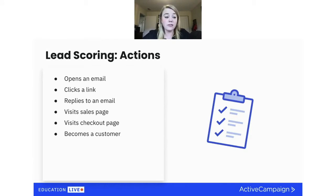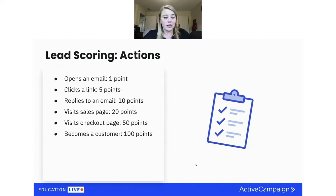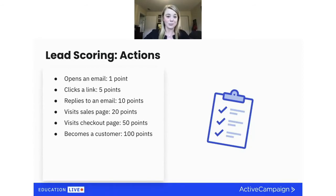You also want to give people points when they become a customer — sometimes people go from zero to customer right away. As quick parameters: email opens are about 1 point, email clicks are 5 points, replying to an email is 10 points, visiting your sales page is 20 points, visiting your checkout page is 50 points, and becoming a customer is the full 100 points.